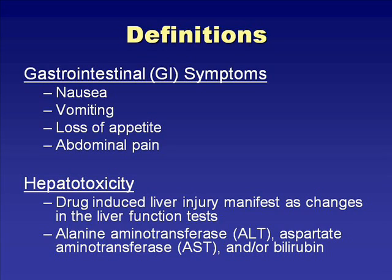Gastrointestinal symptoms include nausea, vomiting, loss of appetite—which is sometimes missed if not asked specifically—or abdominal pain. While all of these symptoms can occur in the setting of hepatotoxicity, they can also occur in the absence of actual liver injury. Hepatotoxicity is defined as drug-induced liver injury manifest as changes in liver function tests, commonly measured using ALT, AST, and/or bilirubin.